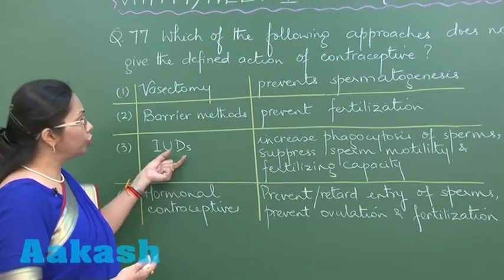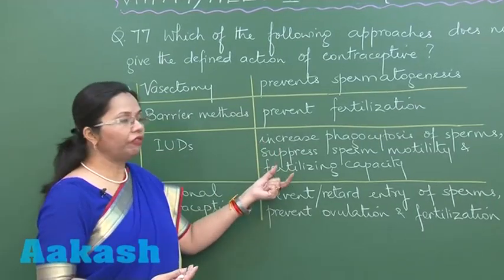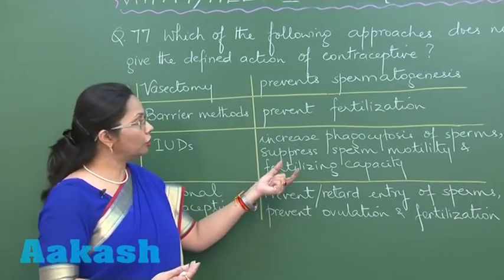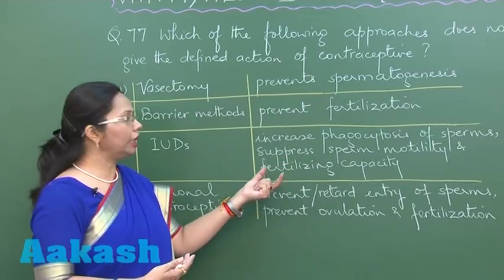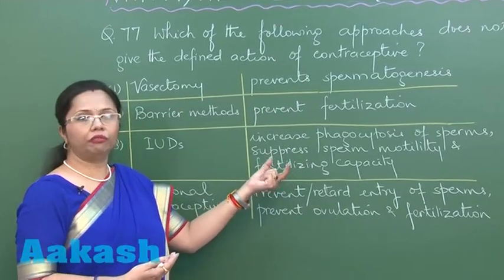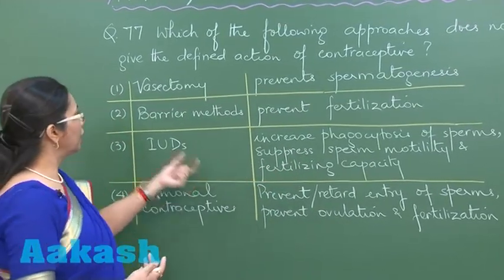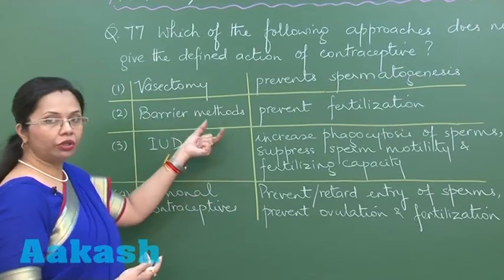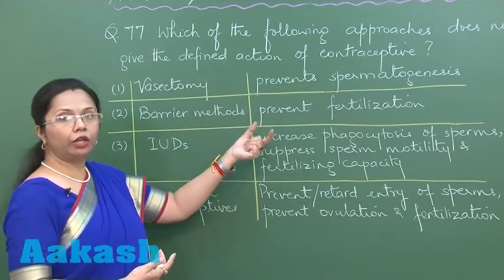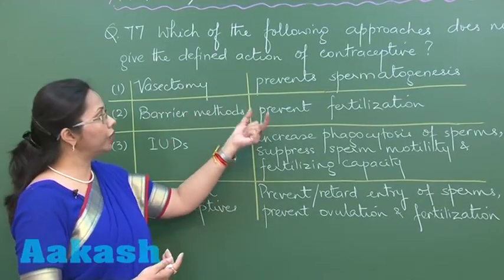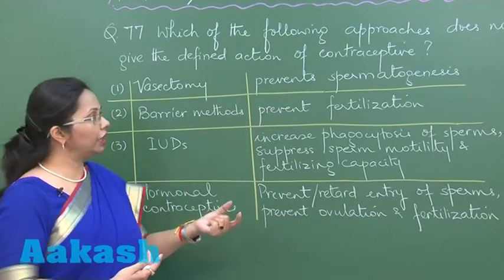Intrauterine devices increase phagocytosis of the sperms, suppress sperm motility and even their fertilizing capacity — that's also correct. Barrier methods like condoms prevent the meeting of the sperms and the egg and thus prevent fertilization.